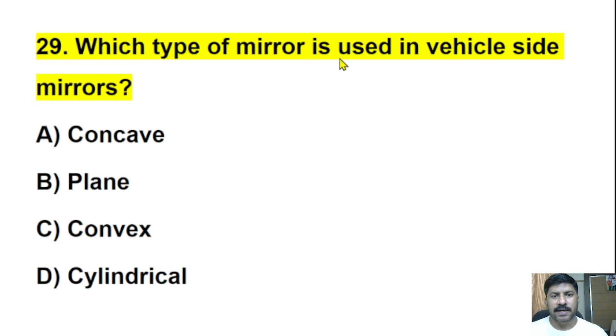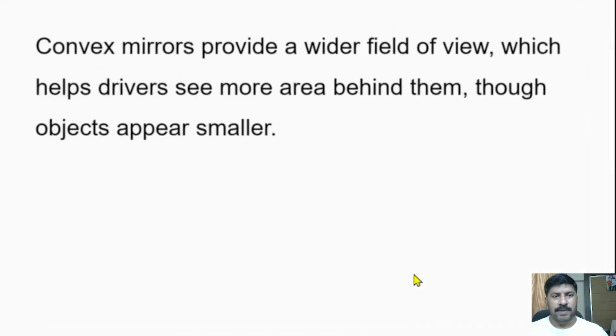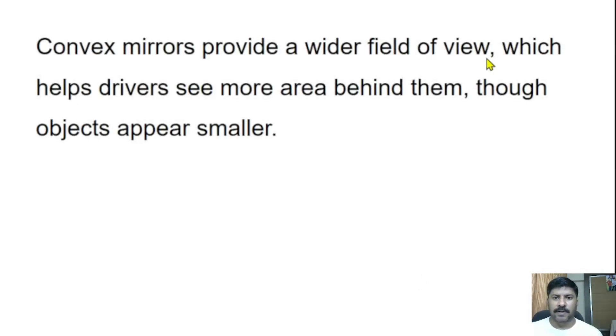Twenty-ninth question: Which type of mirror is used in vehicle side mirrors? Concave, plane, convex, or cylindrical? The correct answer is convex mirrors. Convex mirrors provide a wider field of view, which helps drivers see more area behind them, though objects appear smaller.